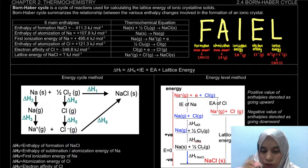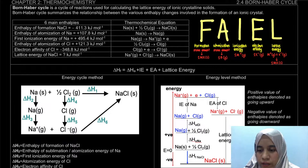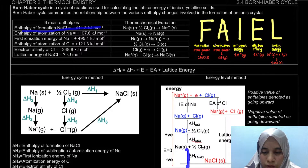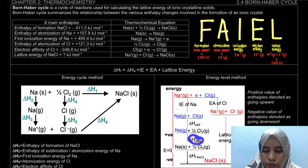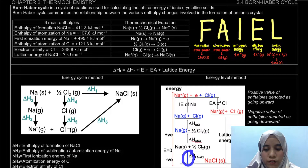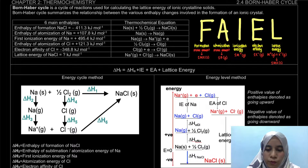For the energy level method, we have a y-axis representing energy. Positive values of enthalpy are denoted as going upward, and negative values go downward. For example, formation here is negative 411 kJ/mol, so the arrow points downward. For atomization, the value is positive, so the arrow points upward. For the energy level diagram, the length of each arrow must be proportional to the value it represents.